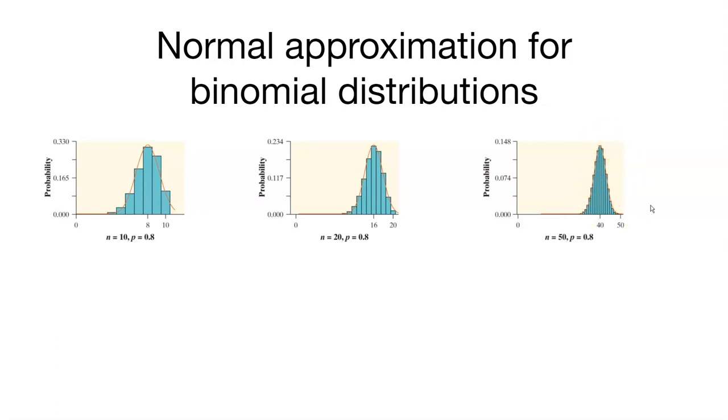As n gets larger, something interesting happens to the shape of the binomial: it becomes more normal looking.